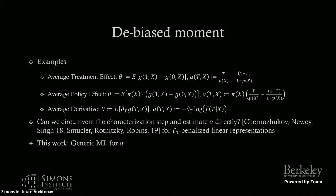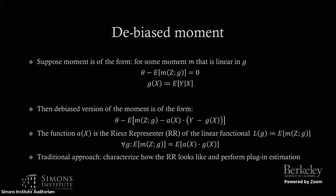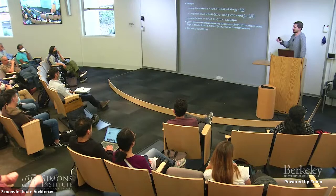Q: Is the reason we do debiasing to get doubly robust rates? A: Yes, that's the main reason. Once you de-bias, the error of g enters only in a second-order term — in fact it's the product of the errors of a and g that matters. The prior work focused on particular types of linear representations using sieves with L1 penalized estimation for the Riesz representer. The motivation of this work is: can we use generic machine learning for learning that Riesz representer, not just sieves and linear representations?